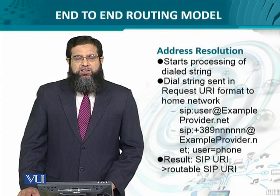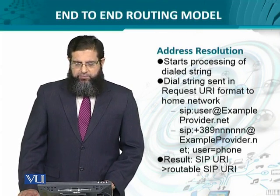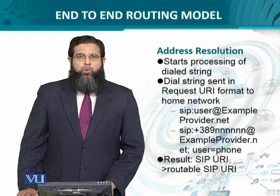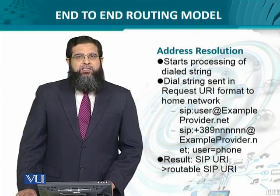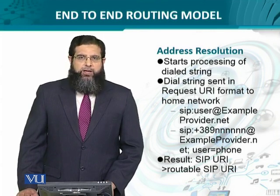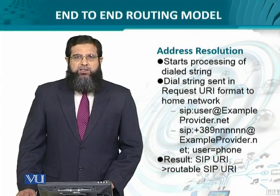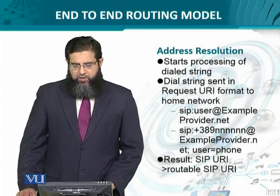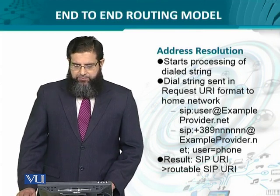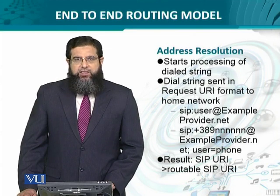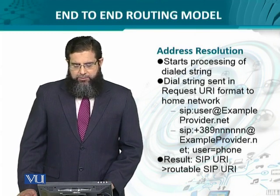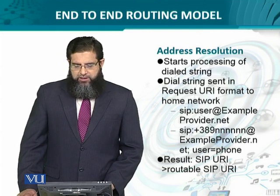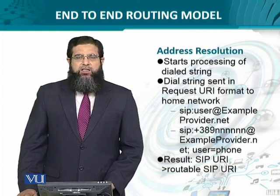The address resolution starts with the processing of the dialed string. The dialed string is sent as a request URI to the home network. The home network essentially implies the IMS for processing this request. The format could be, if it is a voice over IP connection, then it could be user at example provider dot net. Or if it is a telephone number based on the ENUM format, then it could be something like plus 389 number at example provider dot net, and the user is the IP phone.